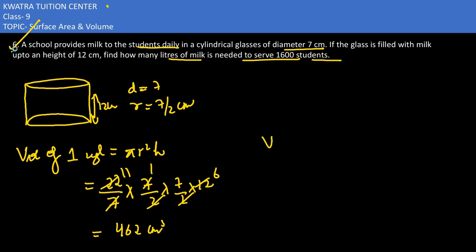Then I need to find it for 1600. So volume of 1600 cylindrical glasses would be 1600 multiplied with 462 cm cubed.